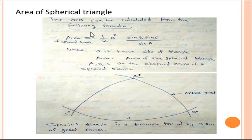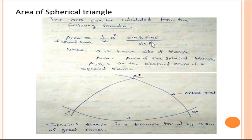For determination of the area of the spherical triangle, it is assumed that the triangle is approximately a plane triangle and no serious error is caused by this assumption. The area can be calculated from the formula: Area = (1/2) × a² × sin B × sin C / sin A. Here, a is the known side, and A, B, C are the observed angles of the spherical triangle. A spherical triangle is the triangle formed by three great circles.